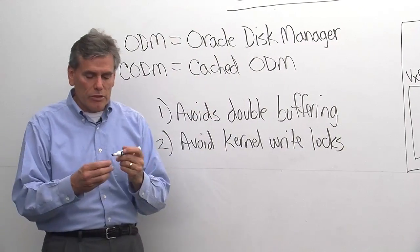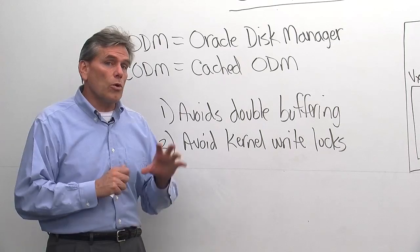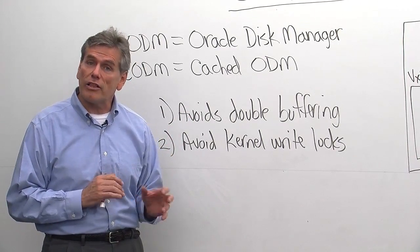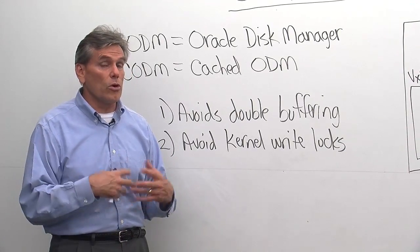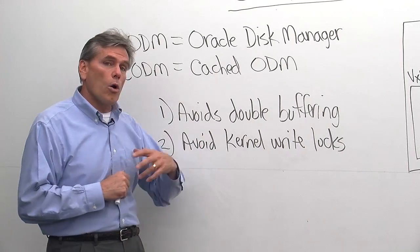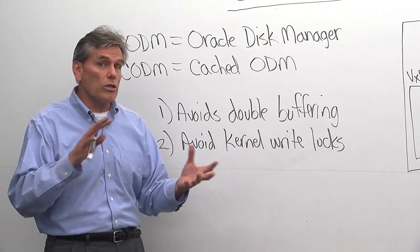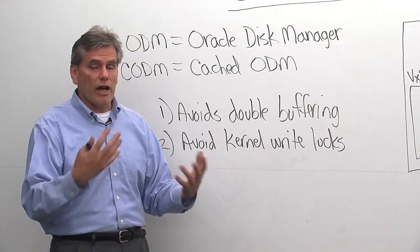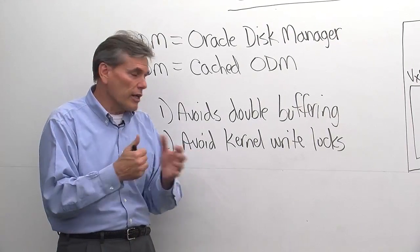Another big benefit is we avoid kernel write locks. Traditionally, what happens with a UNIX file is when you open that file, UNIX only allows one write lock on that file at a time. Databases really like to do their own locking. So instead of only being able to have one writer, a database really wants to have multiple writers, and they want to do locking on their own terms — row-level locking, file-level locking, database-level locking, but really in the context of row-level locking.